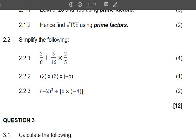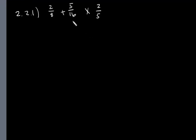2.2.1 says that we need to simplify the following: 2 over 8 plus 5 over 16 times 2 over 5. So we know according to Bodmas rules we need to work this out first, 5 over 16 multiplied by 2 over 5.